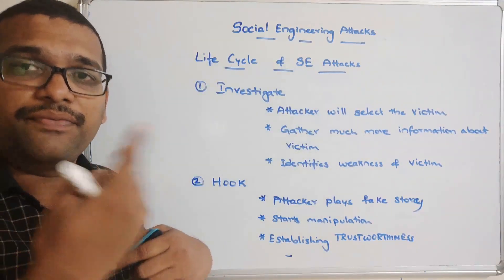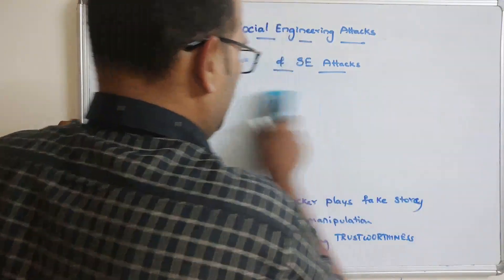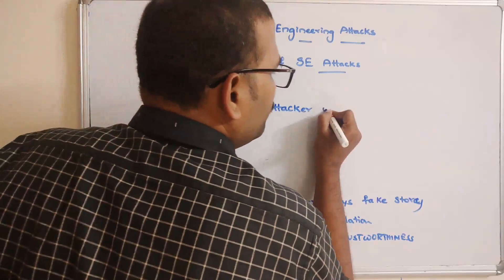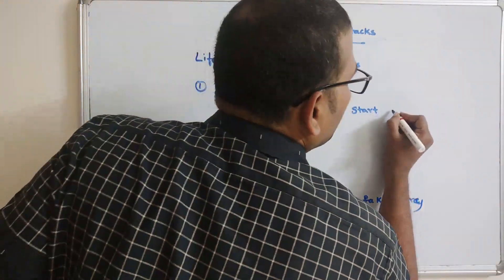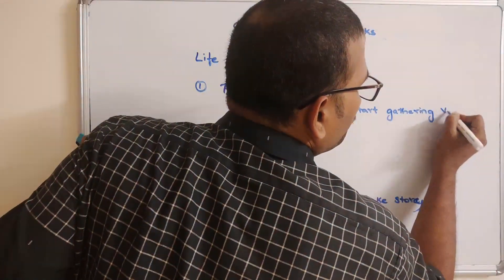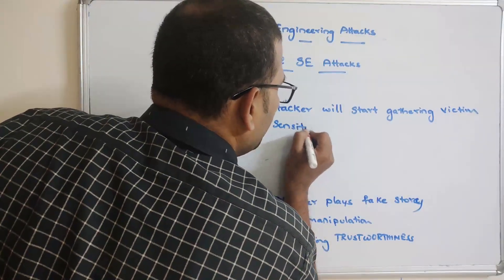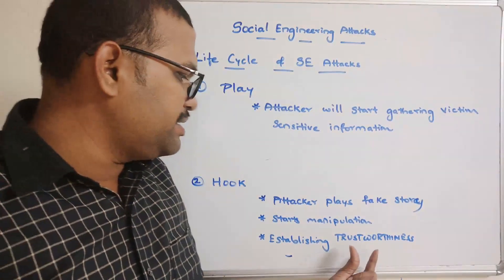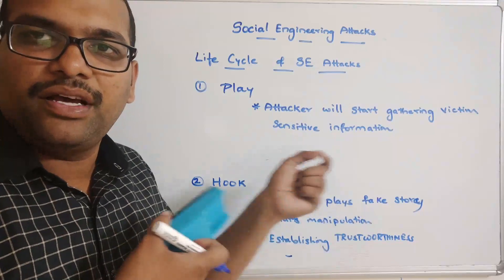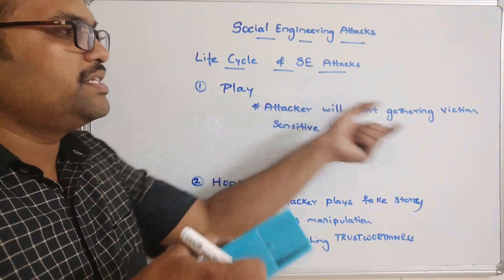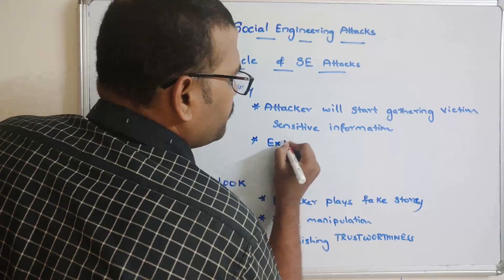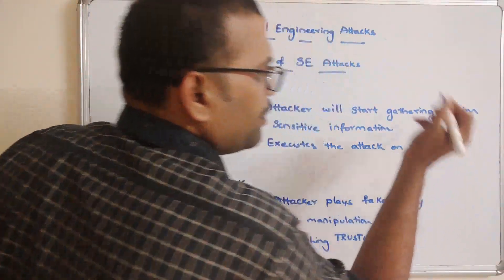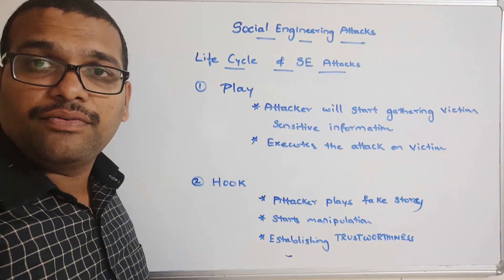The third phase is Play. Here the attacker will start gathering the victim's sensitive information. Using the trust established in the previous stage, the attacker executes some types of attacks on the victim to gather their information. This all happens in the third phase.